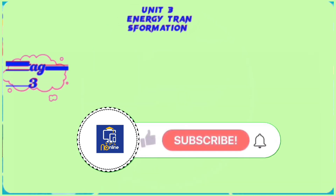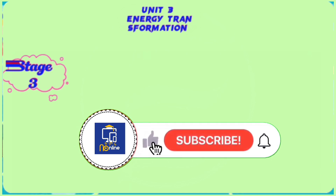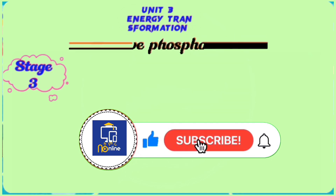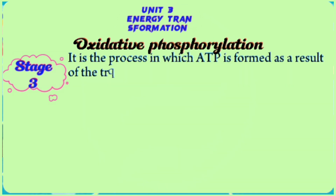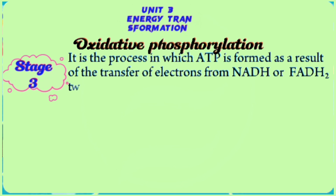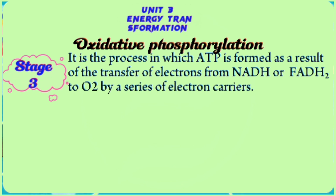Oxidative phosphorylation is a stage of cellular respiration. It is a process in which ATP is formed as a result of the transfer of electrons from the NADH or the FADH2 to the oxygen by a series of electron carriers, with oxygen serving as the terminal electron acceptor.